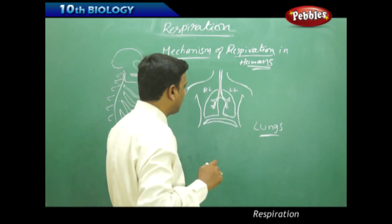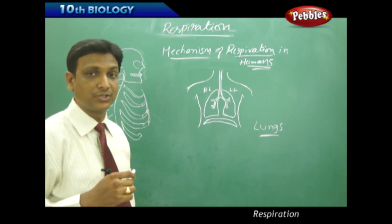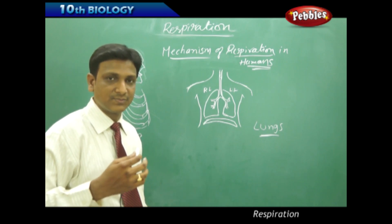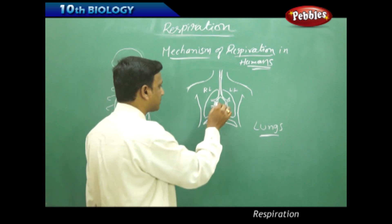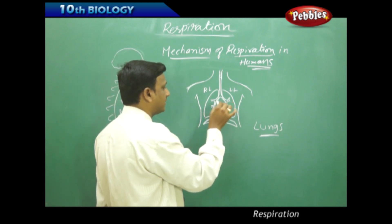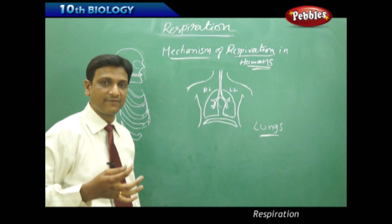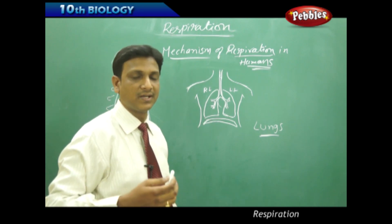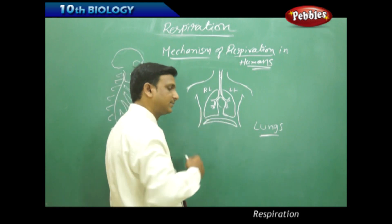We can also notice one more thing: the left lung is smaller compared to the right lung. This is because the left lung is smaller to accommodate some space for the heart. The heart is located slightly towards the left side, so the left lung is a bit smaller to accommodate the heart in that place. These are the two lungs.